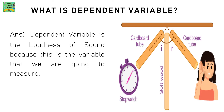The dependent variable is the loudness of the sound, because the loudness depends on the material used. Since a cardboard tube is used here, there is a certain loudness to the sound. However, if the material is changed, the loudness could increase or decrease depending on it.